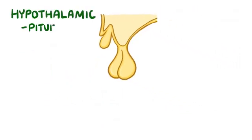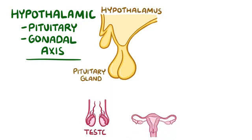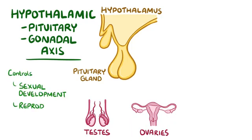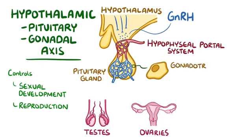The hypothalamic-pituitary-gonadal axis is a system of hormone signaling between the hypothalamus, pituitary gland, and gonads — either the testes or the ovaries — to control sexual development and reproduction. Gonadotropin-releasing hormone is released into the hypophyseal portal system, which is a network of capillaries connecting the hypothalamus to the hypophysis, or pituitary. When gonadotropin-releasing hormone reaches the pituitary gland, it stimulates cells in the anterior pituitary, called gonadotrophs, to release gonadotropin hormones — luteinizing hormone and follicle-stimulating hormone — into the blood.